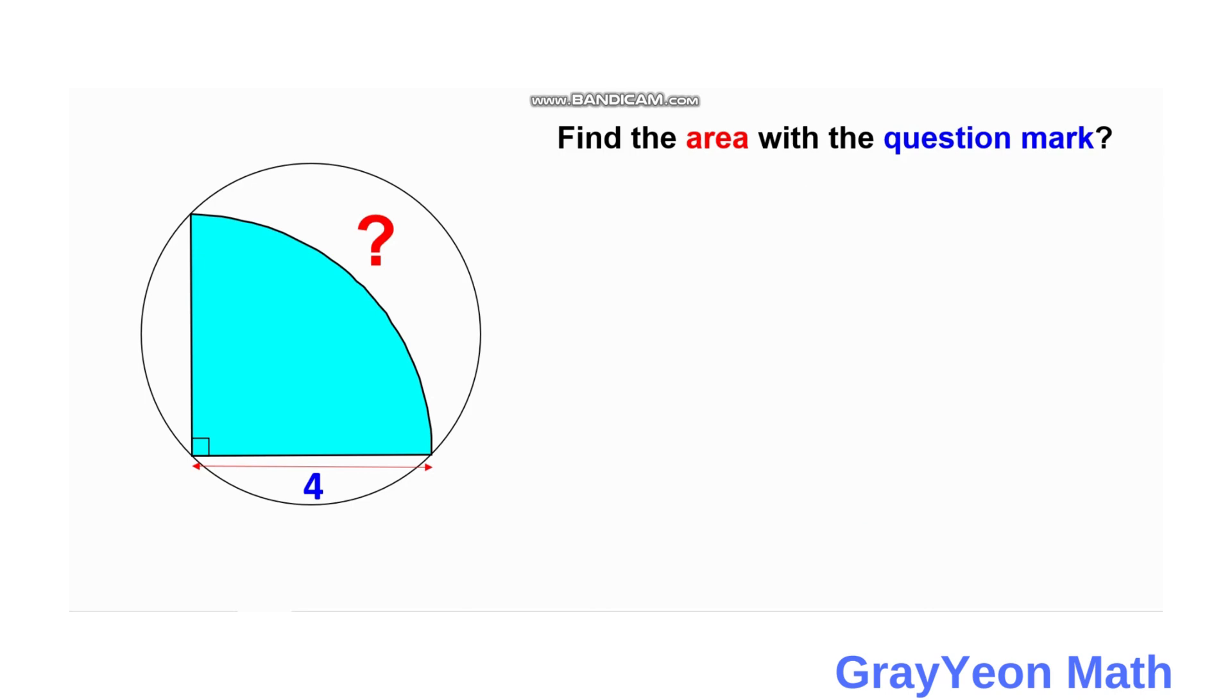Okay, so first thing that we need to do is we need to draw a line from these endpoints of this quarter circle. Notice that this is actually the diameter of the circle because it is opposite this right angle.